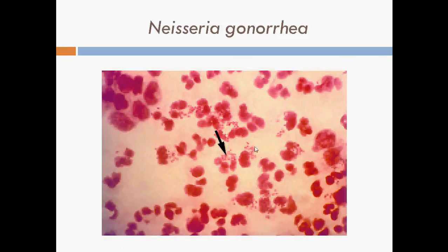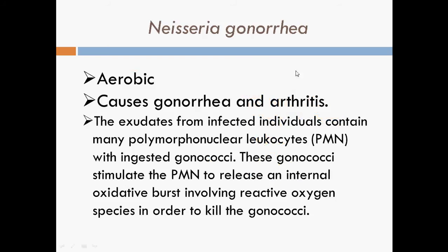Here we have Neisseria gonorrhoeae in the microscopic view. Neisseria gonorrhoeae are aerobic and cause gonorrhea and arthritis, which is inflammation of the joints. The exudate from infected individuals contains many polymorphonuclear leukocytes, or PMNs, with ingested gonococci. These gonococci stimulate the PMNs to release an internal oxidative burst involving reactive oxygen species in order to kill the gonococci. PMNs, or polymorphonuclear leukocytes, are granulocytes with varying shapes of nucleus.